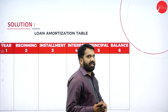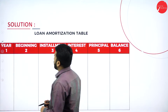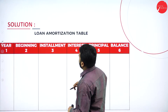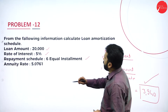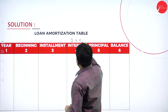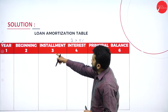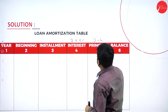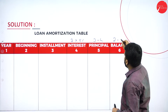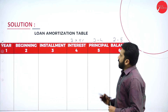Now I'll go back to the table. In this table we have four columns: installment, interest, principal, and balance. How do we calculate the interest? The rate of interest is 5%, so column 2 (beginning balance) multiplied by 5%. For the principal column: column 3 minus column 4. For the balance column: column 2 minus your principal.